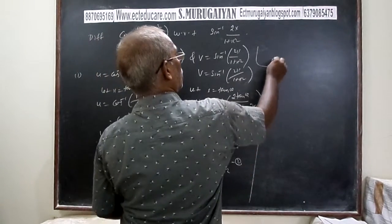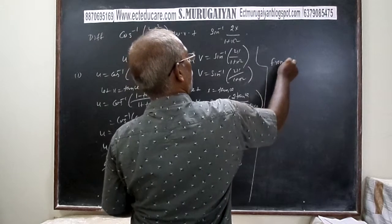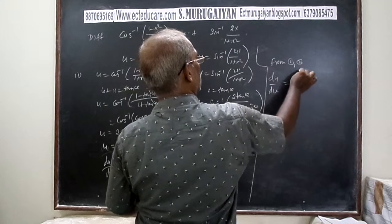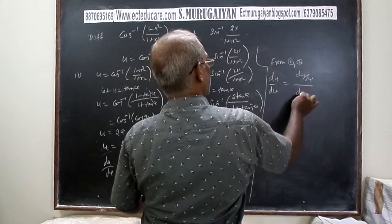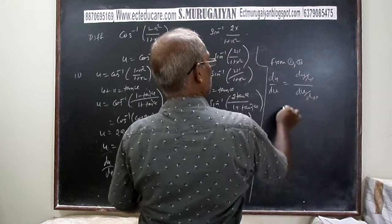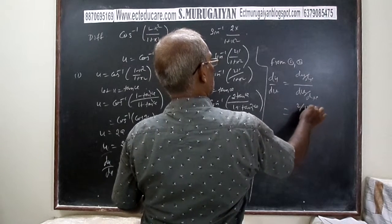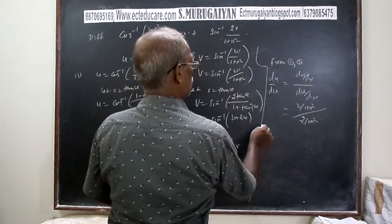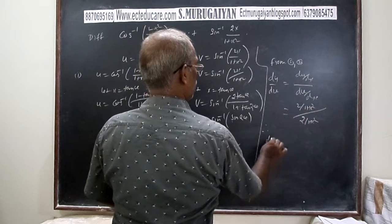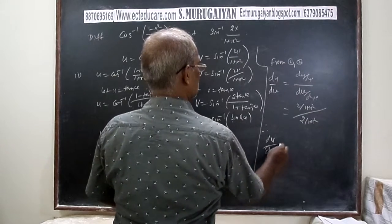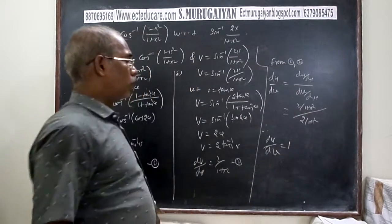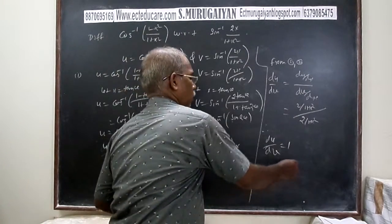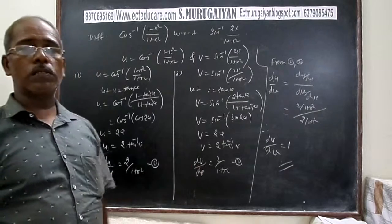From results 1 and 2: du/dv = (du/dx) / (dv/dx) = [2/(1 + x²)] / [2/(1 + x²)] = 1. Therefore, the derivative of the first function with respect to the second function is 1.